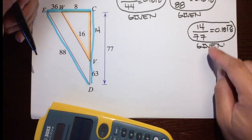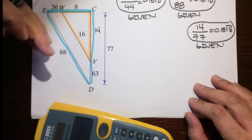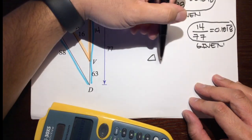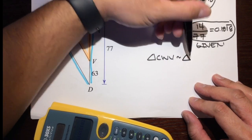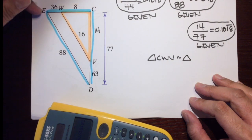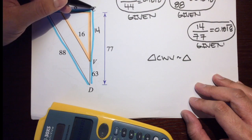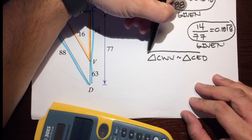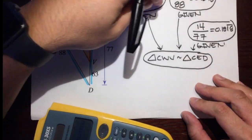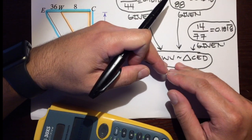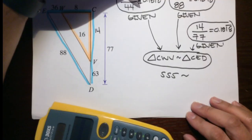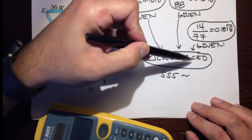We have three sides that are all proportional. So now we can say triangle CWV is similar to triangle CED. This order really matters — C, W, V similar to C, E, D. Don't forget the arrows. These three bubbles — three statements with their reasons — allow us to reach the conclusion that these two triangles are similar because of side, side, side similarity, which says: if all three pairs of corresponding sides are proportional, then the two triangles are similar.